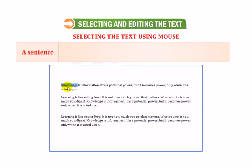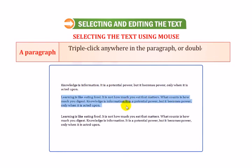To select a sentence, the method is hold down the control key and click anywhere on the sentence. To select a paragraph, the method is triple-click anywhere in the paragraph or double-click in the left margin of the paragraph.